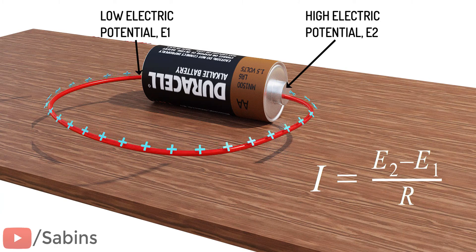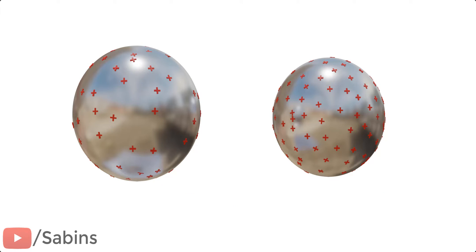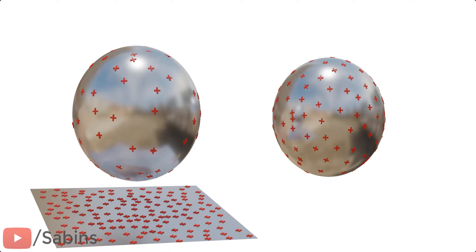To clarify even more, let's consider one more example. Consider these two spheres. One is highly positively charged, and the other is moderately positively charged. Below the moderately charged sphere, let's keep a highly charged plate. The question is, if we connect these two spheres using a conductor, in which direction will the current flow?